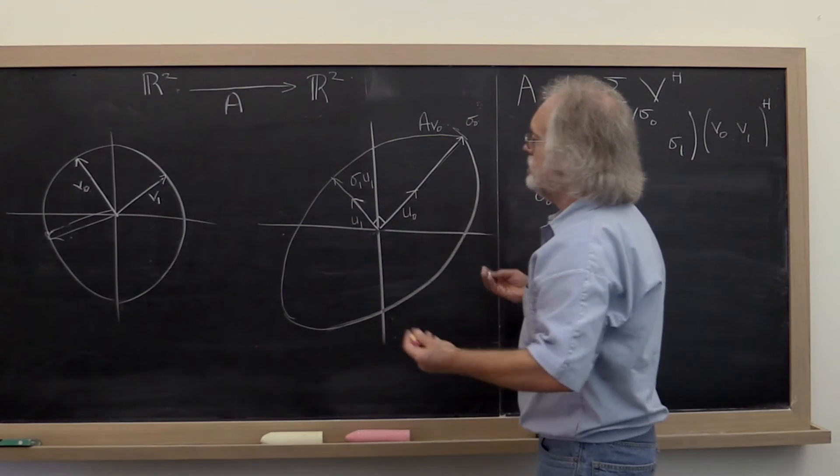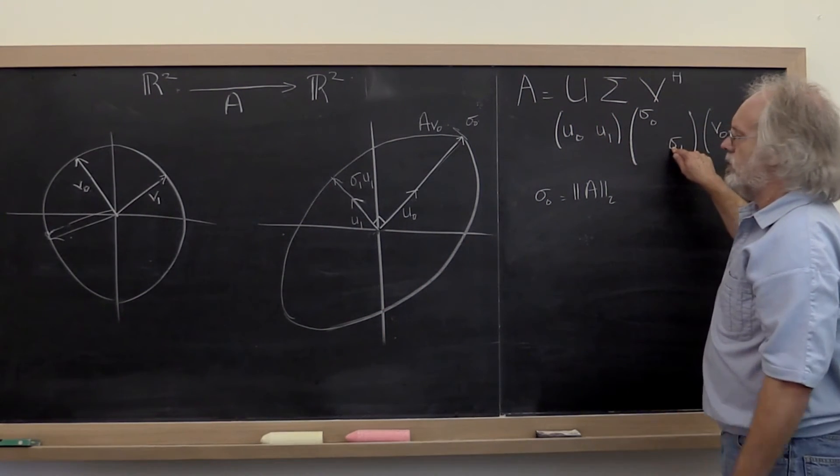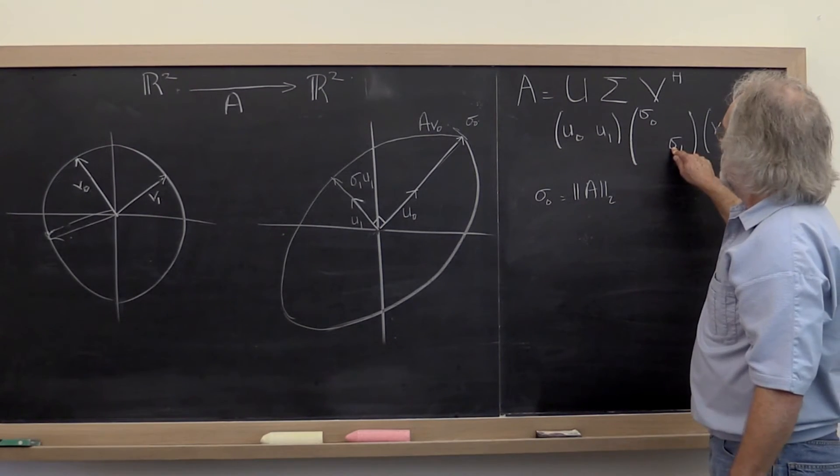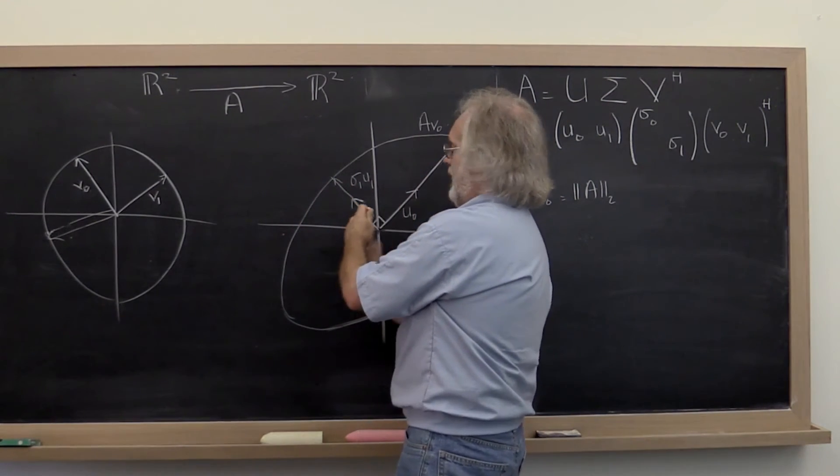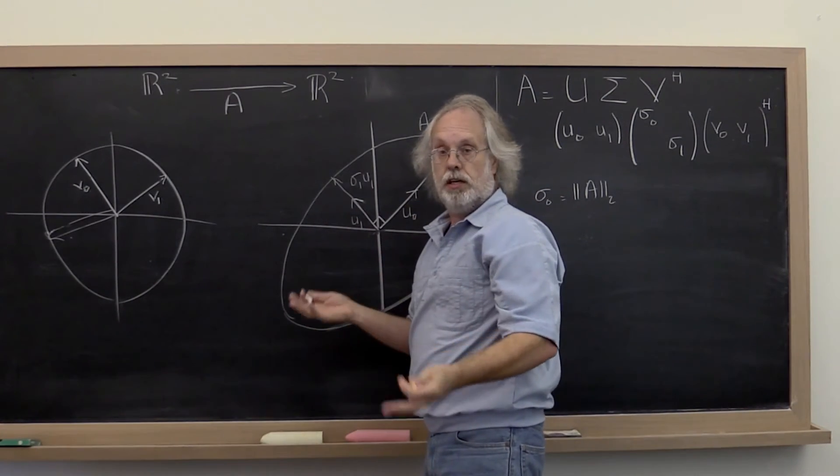Now you can sort of also see what happens if the smallest singular value is actually equal to zero. Then this whole thing would collapse into a line. And that's when the matrix is singular.